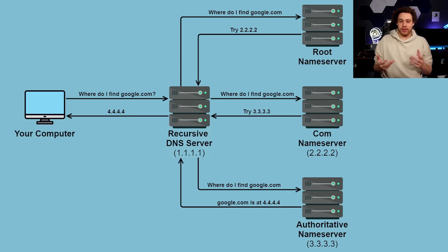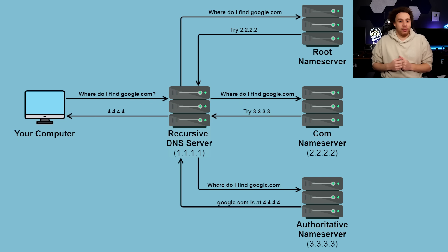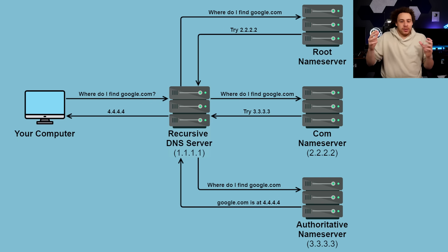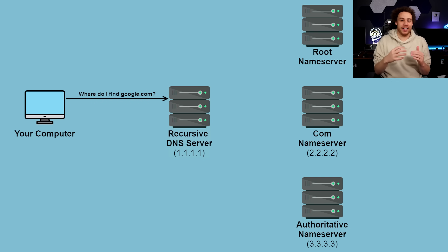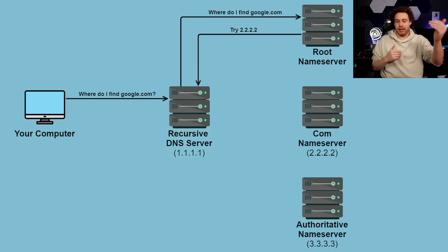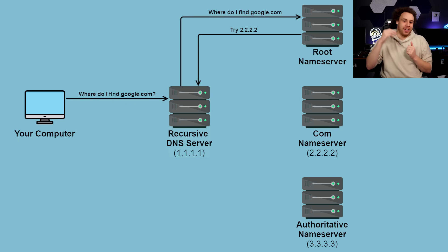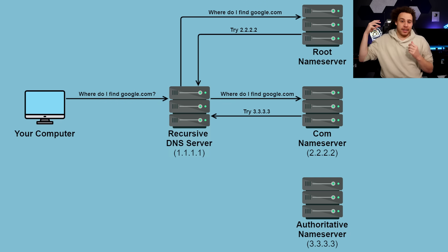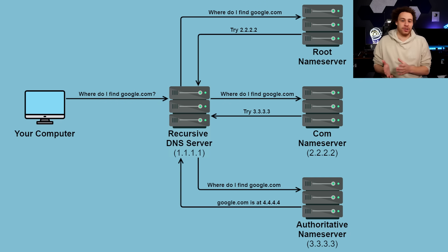Now that we have the IP address for google.com, we can just connect to the server and begin browsing the website. So we have this four-step process where my ISP's recursive DNS resolver does recursive resolution — asking first the root name servers, then the top level domain server, and then finally getting the authoritative name server where it can get the official response.